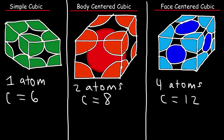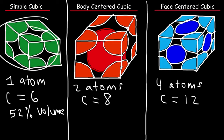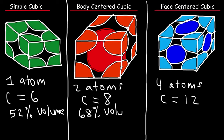The next thing we need to talk about is volume. About 52% of the volume of the cube actually consists of the volume of the atoms, so 48% is empty space. For the body centered cubic structure it's 68% efficient — the atoms occupy 68% of the total space in the cube, meaning 32% is unused space.